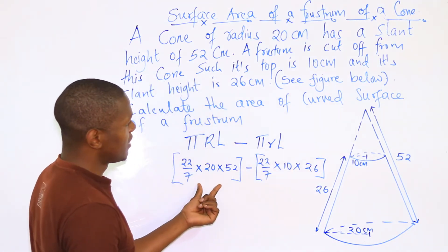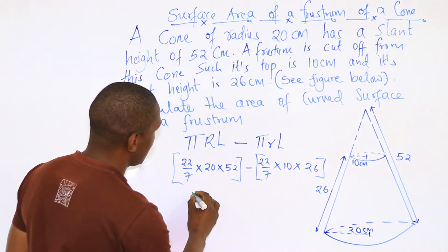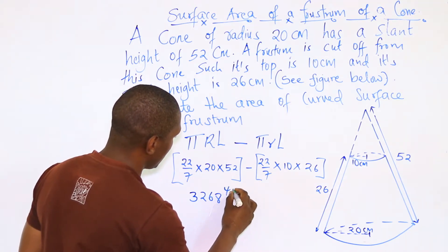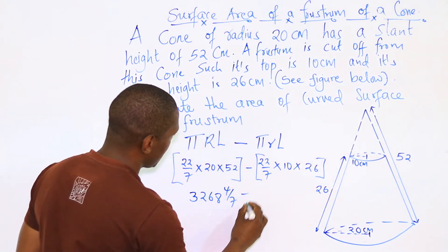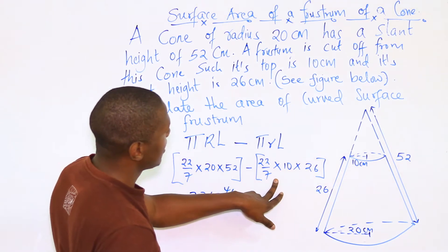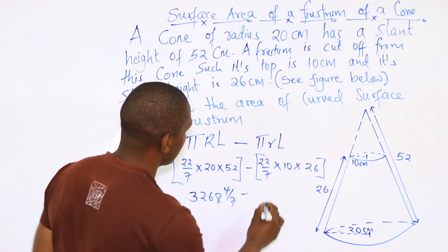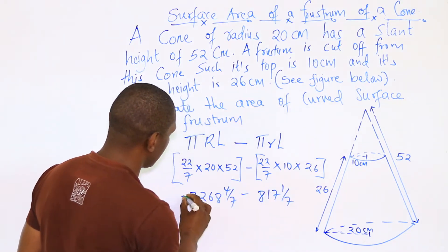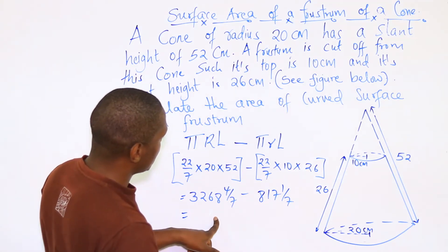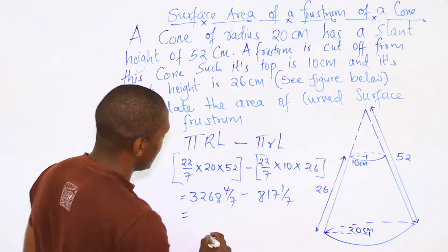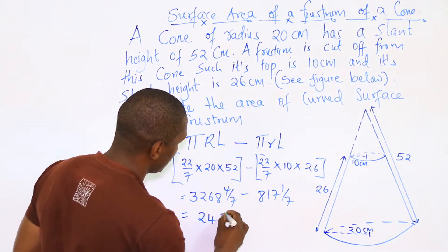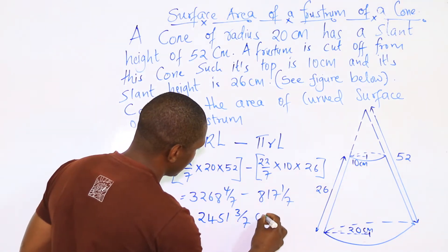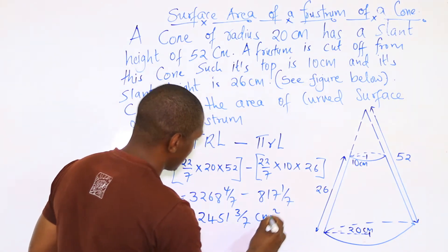Substituting this, you'll have 3268/7. You subtract, keeping this in your calculator, you'll have 817/7. Subtracting, you'll have 2451 3/7 centimeters squared.